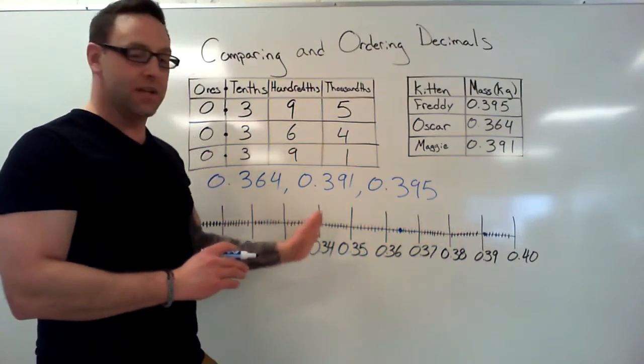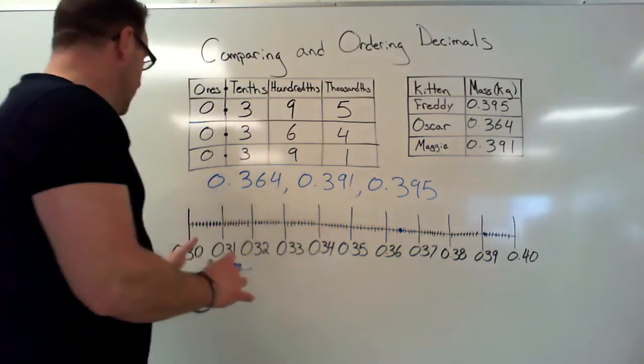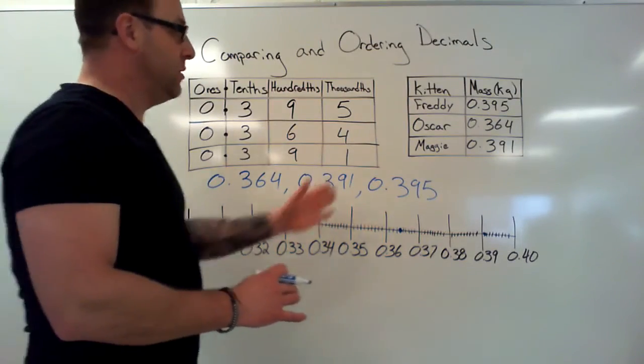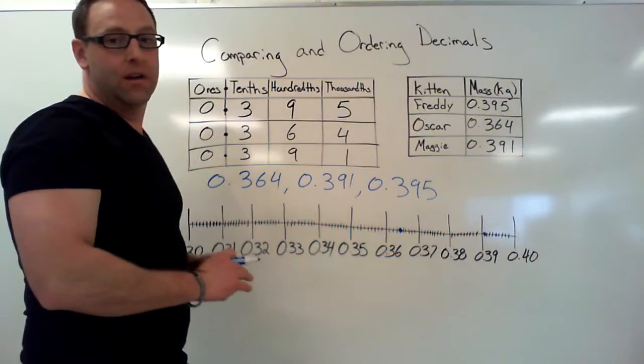It's just counting up from wherever you want to start. The only reason we started at zero point three zero is because those were the numbers that we had here, and I couldn't fit a huge number line on the board and have you still be able to see it.